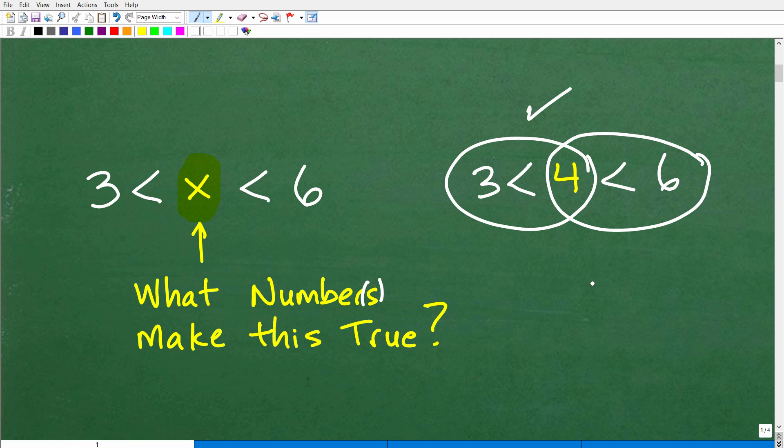Now, is it the only solution? So we could say, all right, four is a solution. Well, let's plug in another number. How about five? So let's take a look at if five works. Is five greater than three? Yes. Is five less than six as well? Yes, it is. So five works as well.